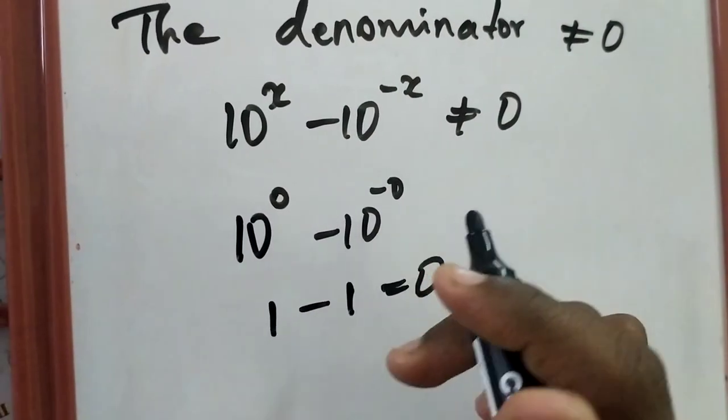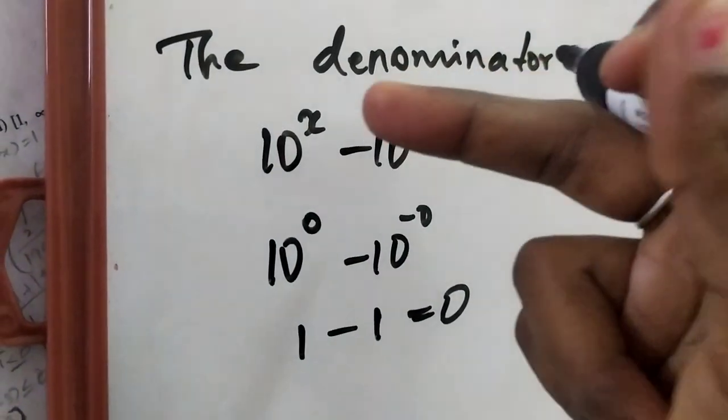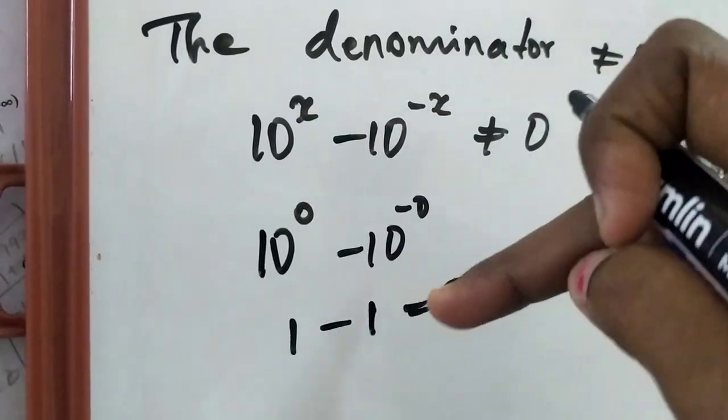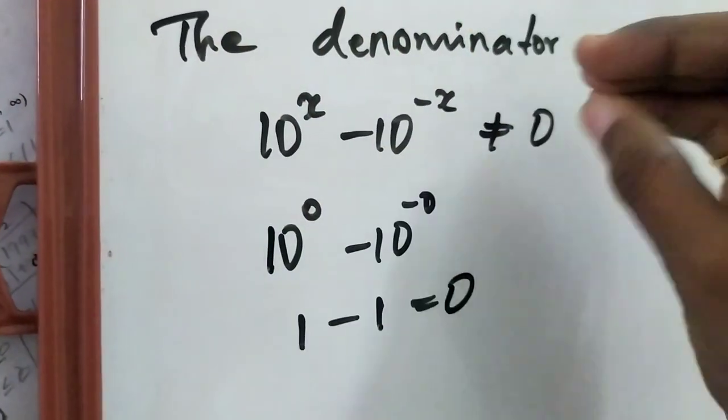So definitely you will be getting 0. When the value of x is 0, you are getting the whole answer as 0.